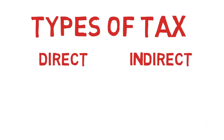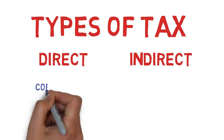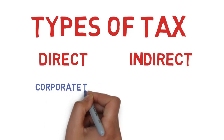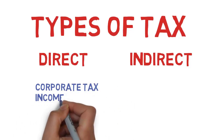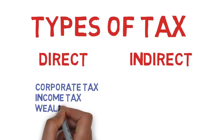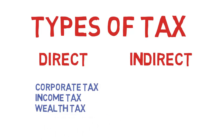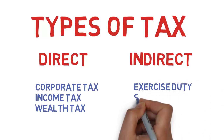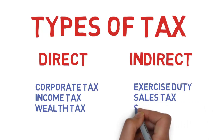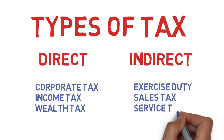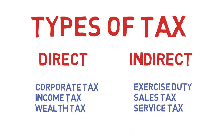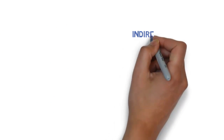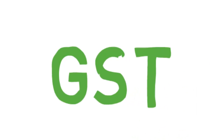There are actually two types of taxes — one is direct tax and the other is indirect tax. Direct tax is the one whose liability cannot be shifted to someone else, like corporate tax, income tax, wealth tax, etc. But indirect tax is the tax whose liability can be shifted to someone else.